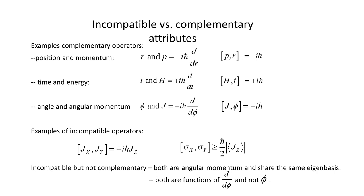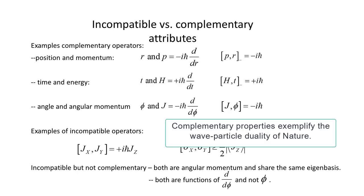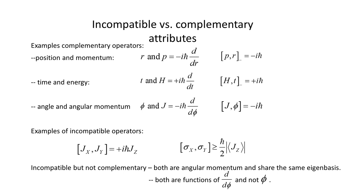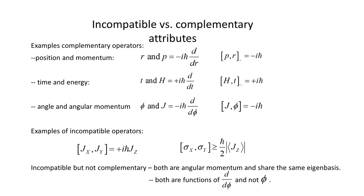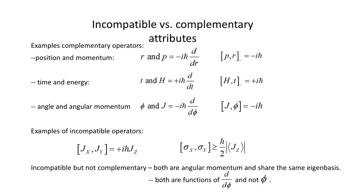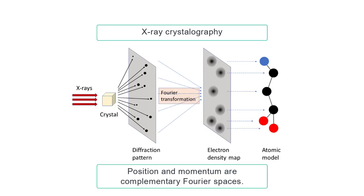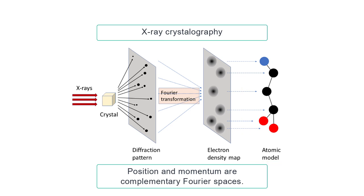Experiments today are largely done on particles with spin, and coincidence experiments are performed. Complementary properties exemplify the wave-particle duality of quantum mechanics, and here are some examples: position and momentum, energy and time, angle and angular momentum. All these don't commute. The product of each complementary pair has units of Planck's constant, that is, units of angular momentum. Each commutator gives i times Planck's constant. To measure complementary properties, different experiments must be performed. For example, scattering experiments, like X-ray crystallography, are done in momentum or k-space, and then the Fourier transform of k-space gives position space, and the structure of the crystal. Position and momentum spaces are complementary Fourier spaces.